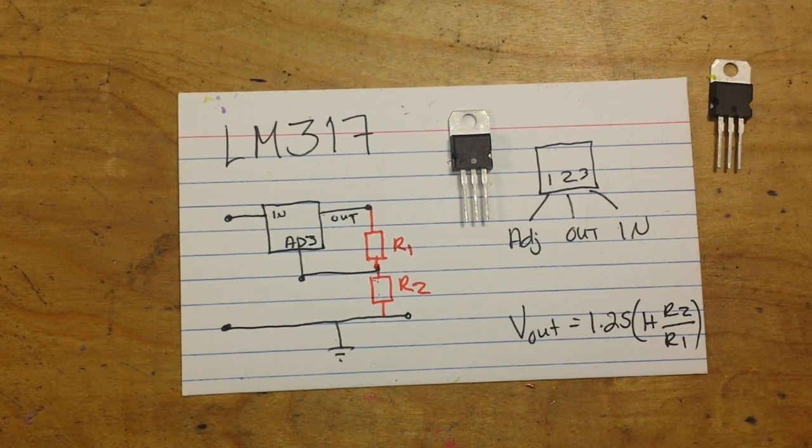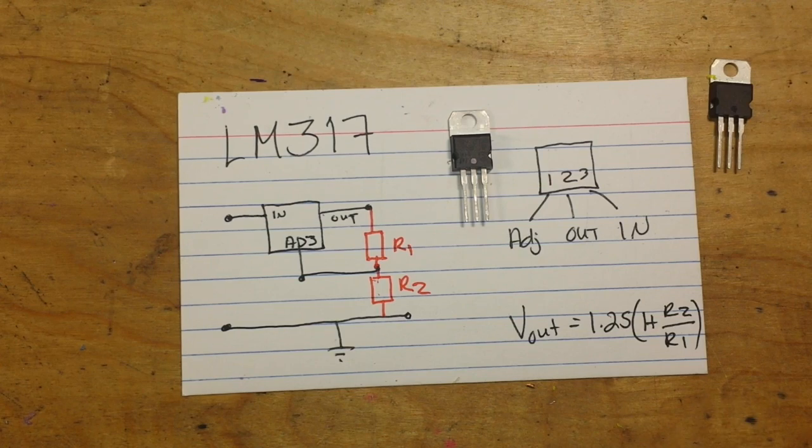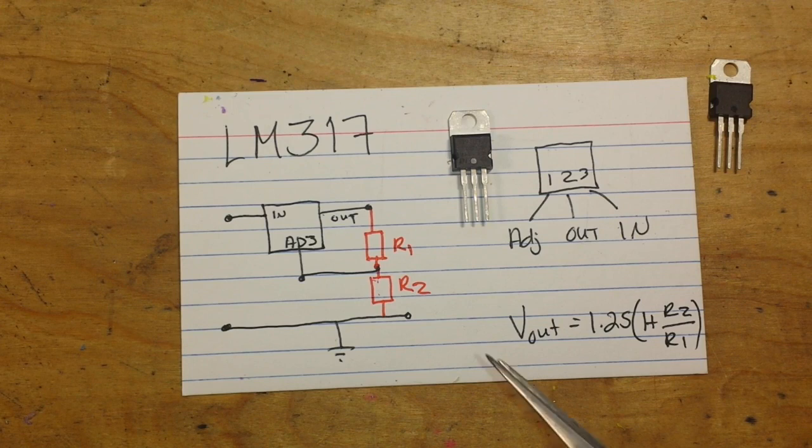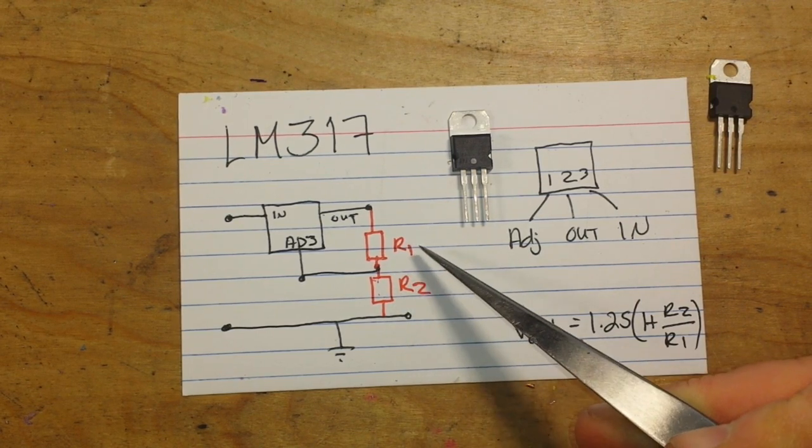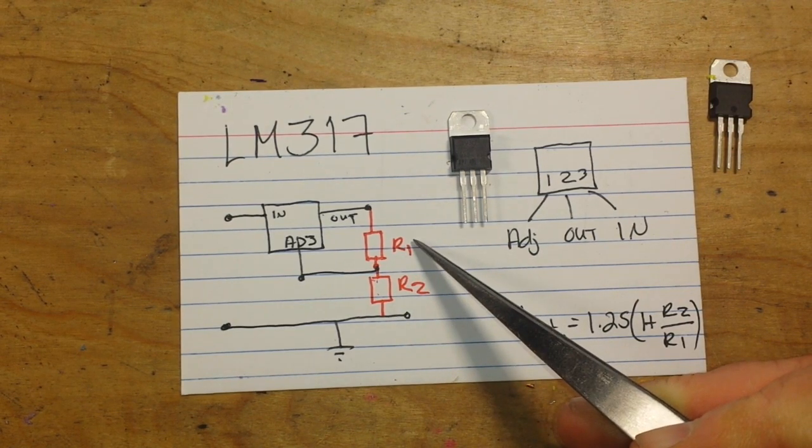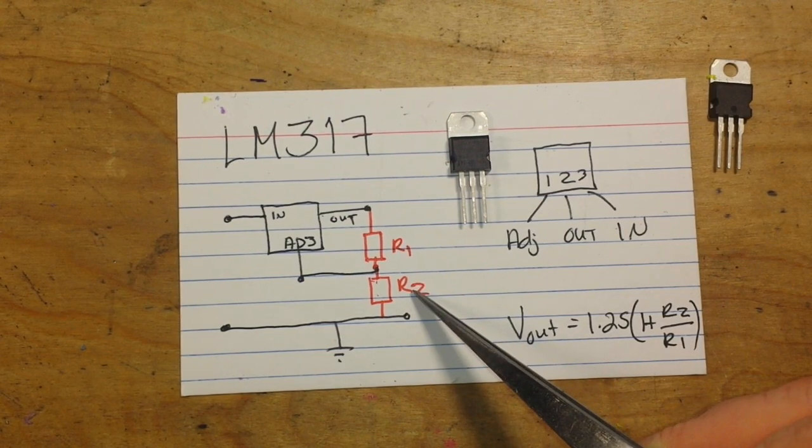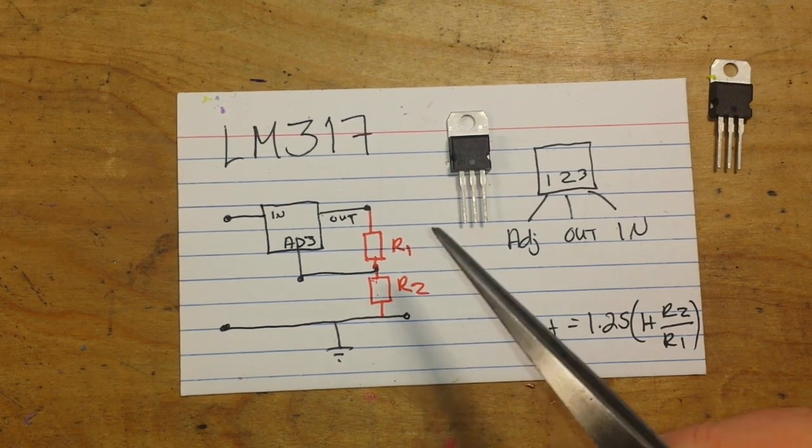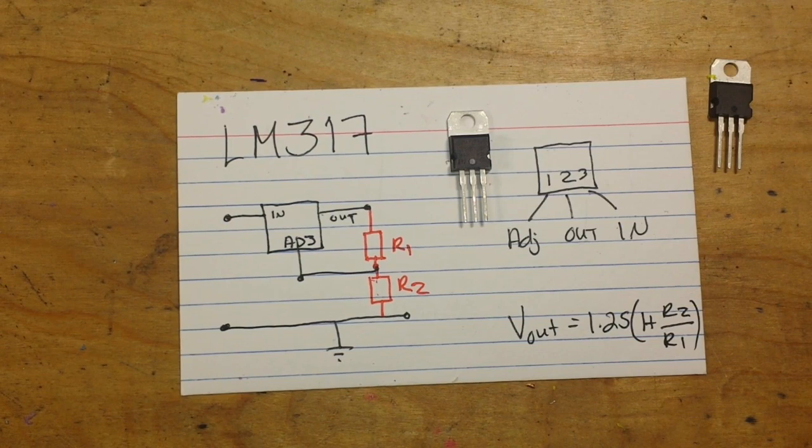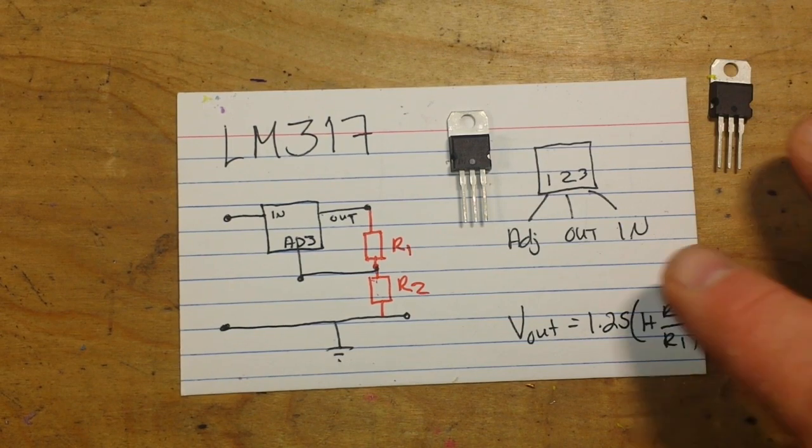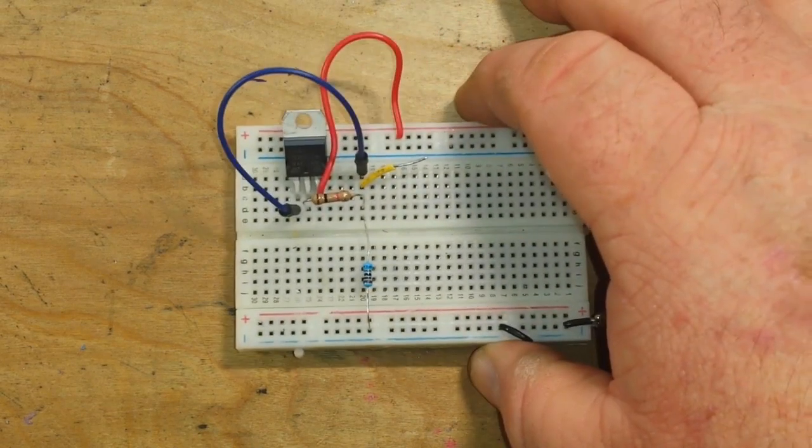So, let's say we have a 12 volt source and we want 9 volts. Well by using that formula, we can say 1K over 6.2K will give us our 9 volts out. And I have just such a thing right here.